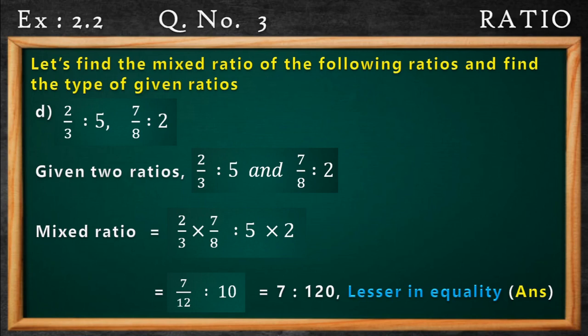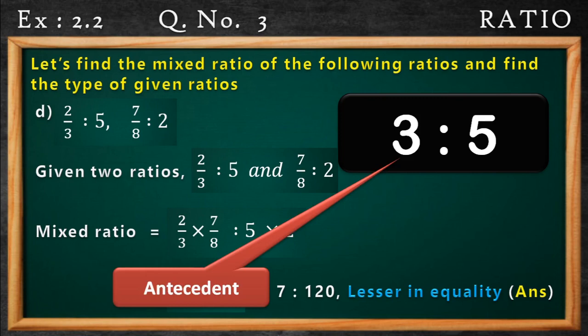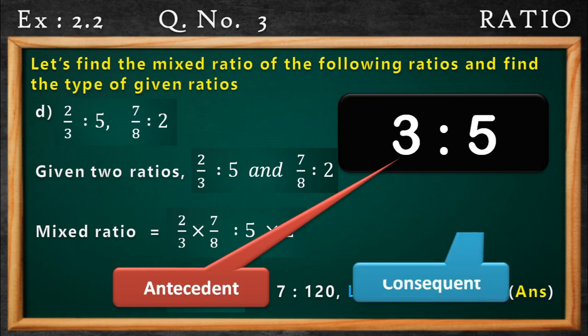The question has two ratios. Before we start mixing, we have to have the idea of antecedent and consequent. So I am taking one example: the ratio 3 is to 5. The left part, that is the first part, is known as antecedent, and the right part or the second part is known as consequent.